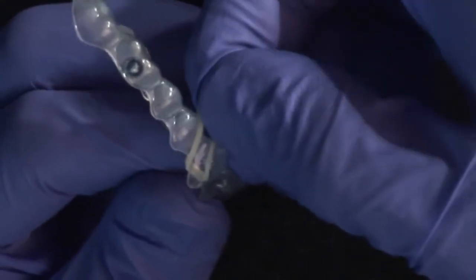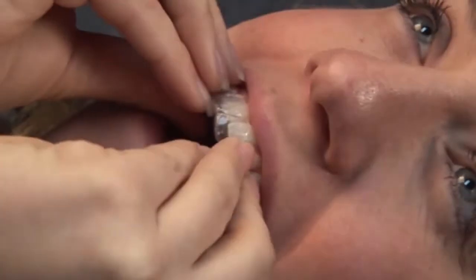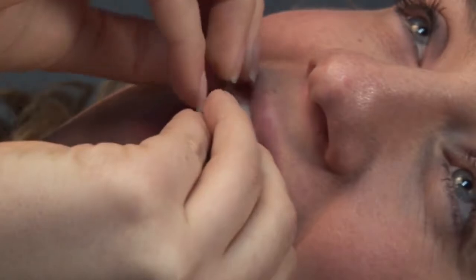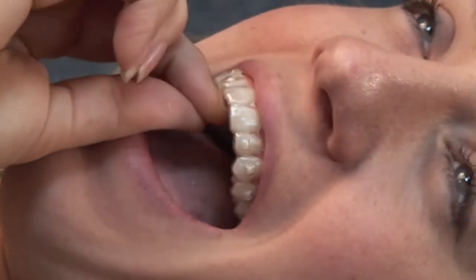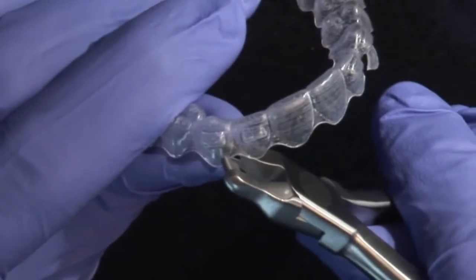By having the elastic retained on the aligner, it makes it easier for the patient to manipulate them. In other words, the aligners are seated with the elastics connected to them. In this manner, the patient is not fumbling around trying to hook the elastics on the seated aligners.